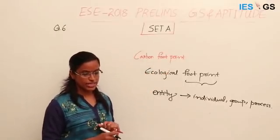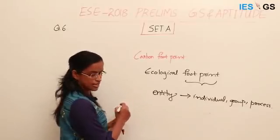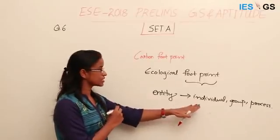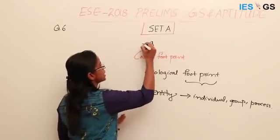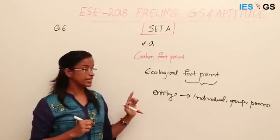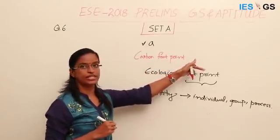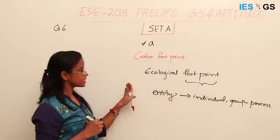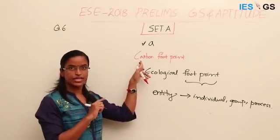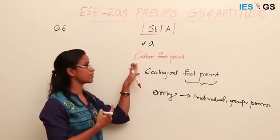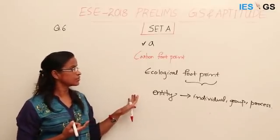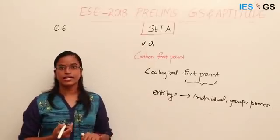Option A tells that carbon dioxide released to the atmosphere as a result of the activities of a particular individual, organization or community — so the answer is option A. Option B tells greenhouse gases emitted by industries, but the footprint is not only for industries — it can be for any entity. Option C is confined to jet fuel only, and option D is confined only to the felling of trees. So the answer is option A.